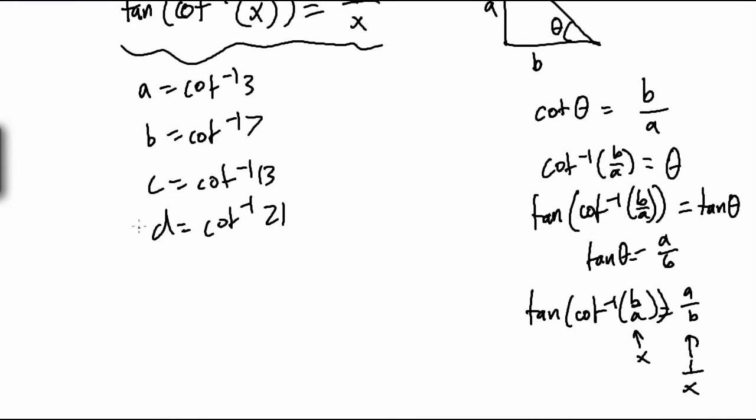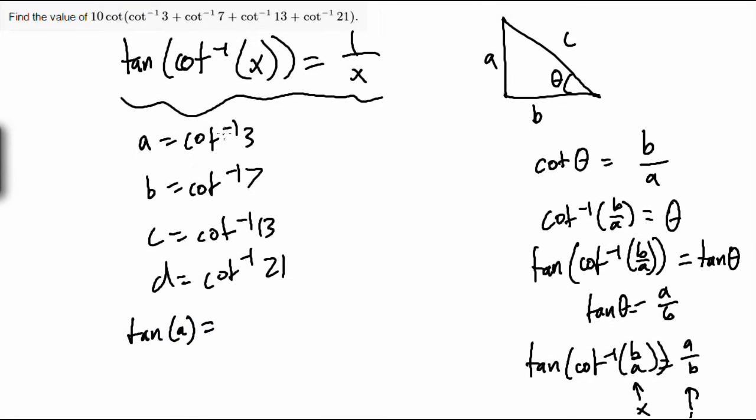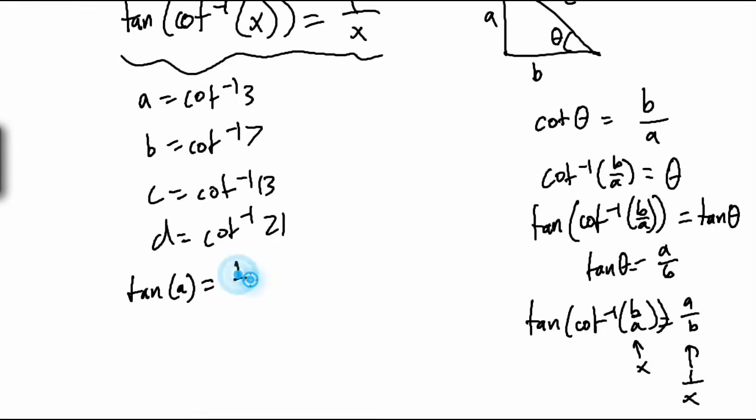Which means that if you take the tangent of all of these, so tan A equals, if you take the tangent of a cotangent inverse of a quantity, then the tangent of that is just 1 over that quantity. Which means that this is just 1 third, because it's 1 over 3, based on the rule above.